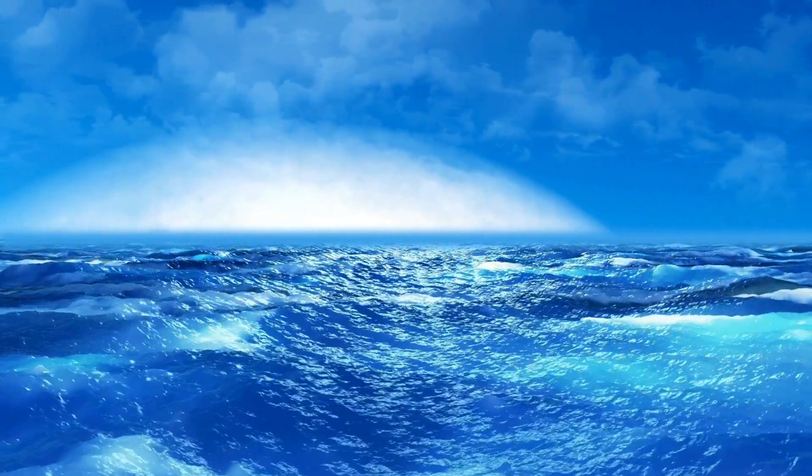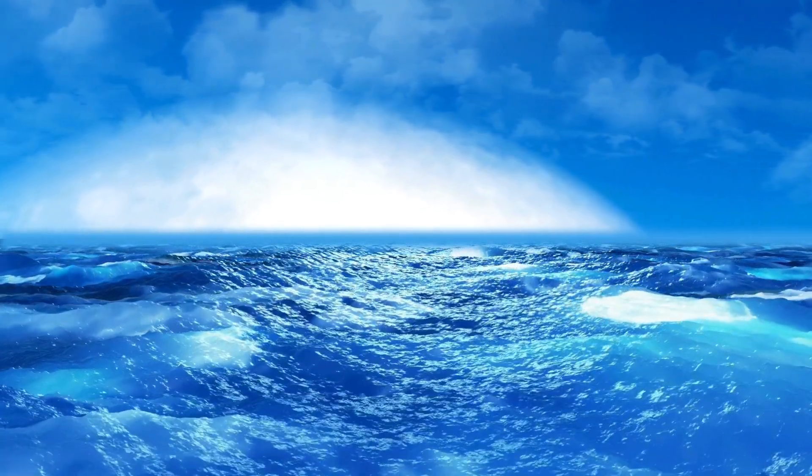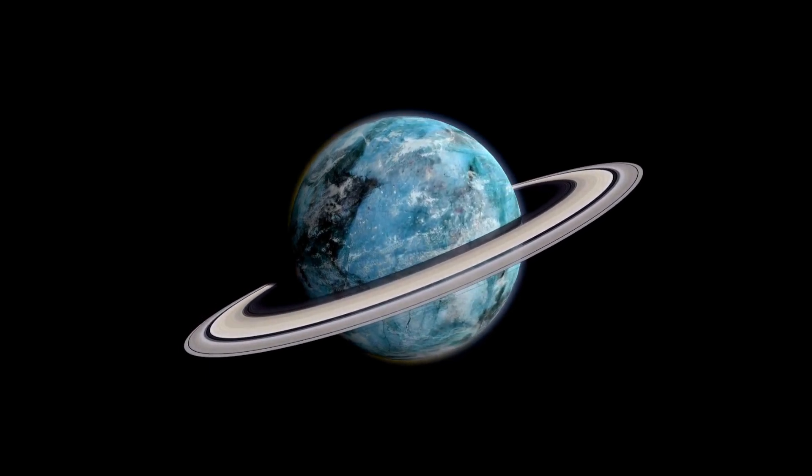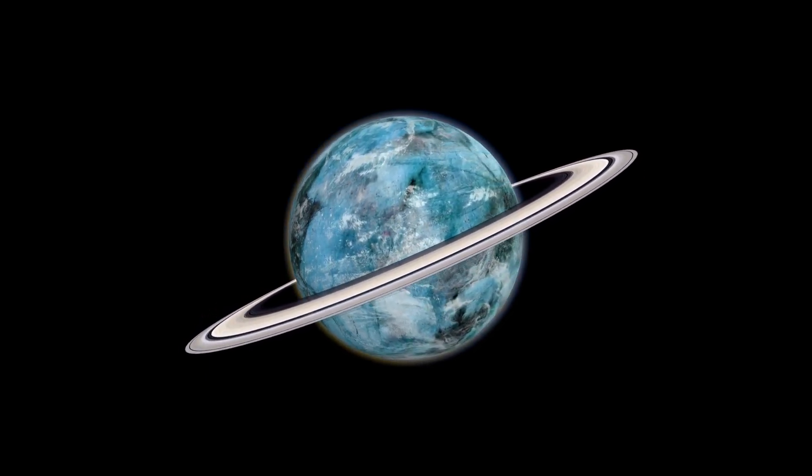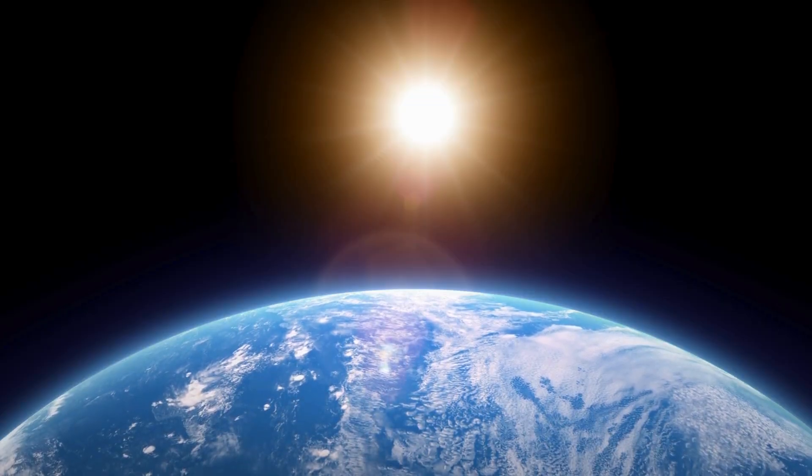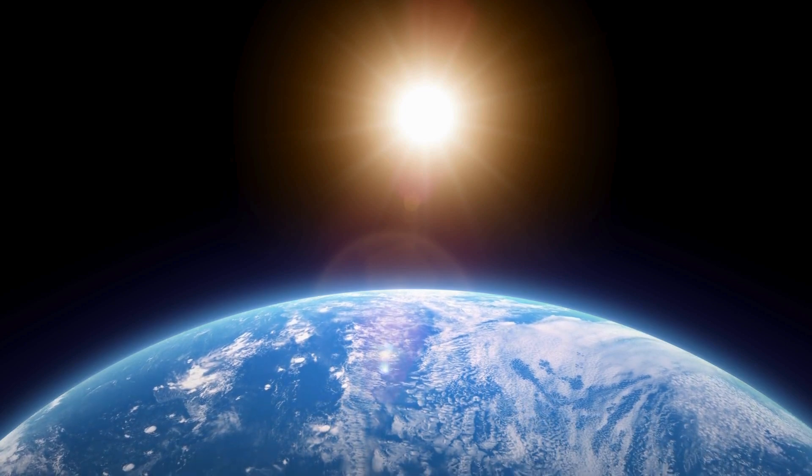But among them all, Proxima Centauri b stands out as a truly remarkable and enigmatic planet. With a year that lasts just 112 Earth days and a distance from its star that is 20 times closer than Earth is to the Sun, it is likely that one side of the planet is always bathed in daylight while the other side remains in perpetual darkness.